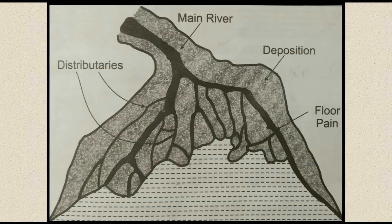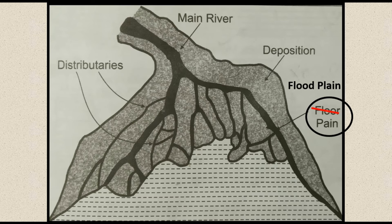From the textbook diagram, a mainstream is coming, deposition is happening on either side of the river, then a delta is found at the mouth, resulting in the river splitting into different distributaries. Note that there is a typing error in the textbook — it should be 'flood plain,' not 'flower plane.' We need to learn to draw this diagram properly and mark the different parts of a deltaic region.